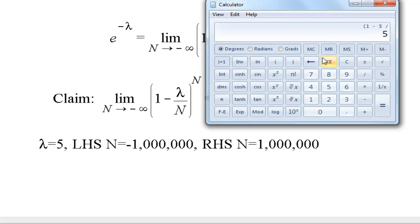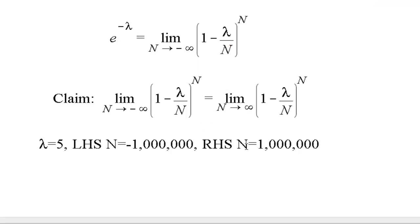Okay, so let's pull up the calculator here. And I'm going to plug lambda equals 5 into this expression on the left and N equals negative a million. So we'll have 1 minus 5 divided by, there's a million, I'm going to hit this button to make it negative. And then we're going to raise that to the power of negative a million. And we end up with 0.006738. So we end up with left-hand side is approximately 0.006738.